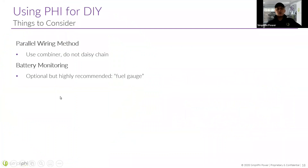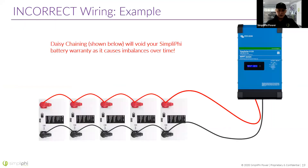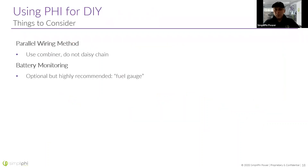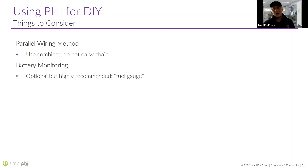Big reminder if you're doing this yourself: do not daisy chain your batteries. With lead acid batteries, people often wire them this way — and that is not the proper way to wire your batteries. Also, many people new to lithium batteries forget battery monitoring. You don't necessarily need a battery monitor, but without one you're basically going to have no clue how much energy you have left until you're very close to emptying your bank. It's optional but highly recommended — it serves as a fuel gauge so you can see the percentage you have left.